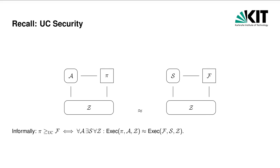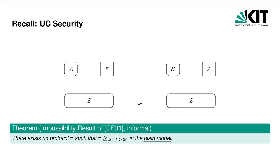Formally, for all adversaries A there exists a simulator such that for all environments Z, the output of Z in an execution with pi and A is indistinguishable from its output in an execution with f and S. This seemingly simple notion is closed under composition, meaning that protocol pi is as secure as f, even if it is executed multiple times or concurrently alongside other arbitrary protocols.